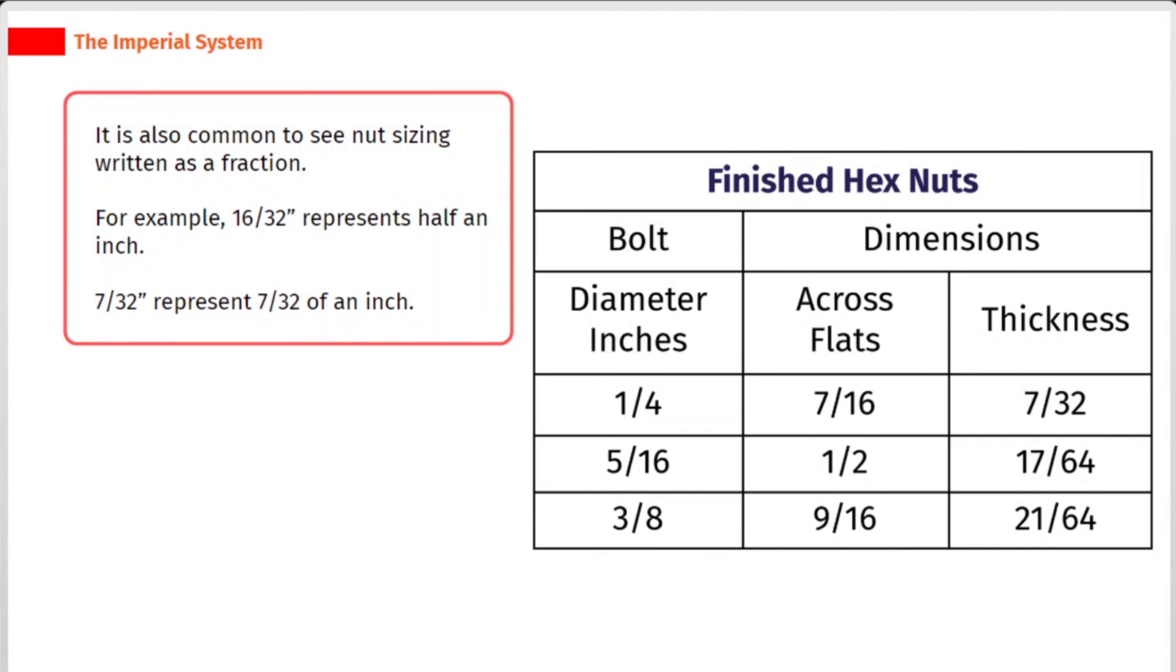It is also common to see nut sizing written as a fraction. For example, 16 by 32 double quotes represents half an inch. 7 by 32 double quotes represent 7 by 32 of an inch.